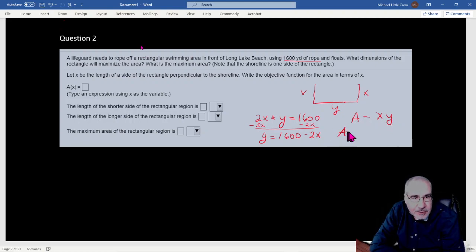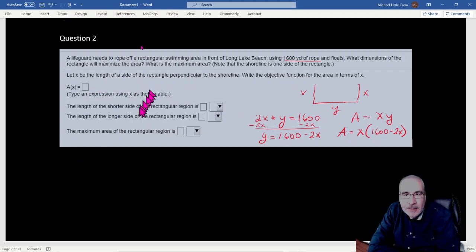So now our area function is going to be x times 1600 minus 2x. And that's what we want to maximize. So let's get to business here. They want us to use x as our variable. What I'm going to do is distribute the x through. So when I write it up here, it's going to be 1600x minus 2x squared. Okay, so that's our answer for that.